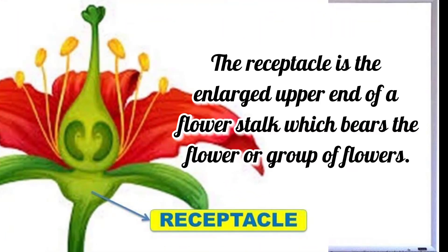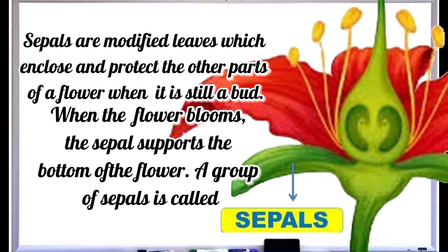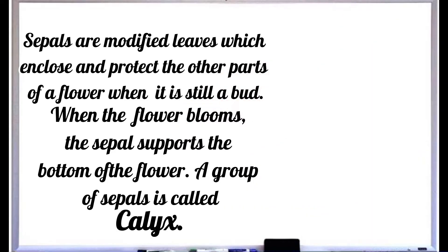Receptacle: the receptacle is the enlarged upper end of a flower stalk which bears the flower or group of flowers. Sepals are modified leaves which enclose and protect the other parts of a flower when it is still a bud. When the flower blooms, the sepal supports the bottom of the flower. A group of sepals is called the calyx.